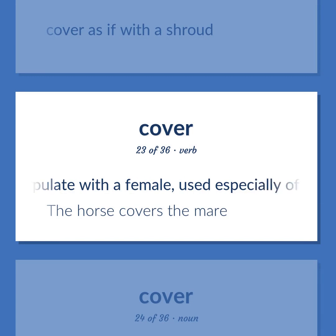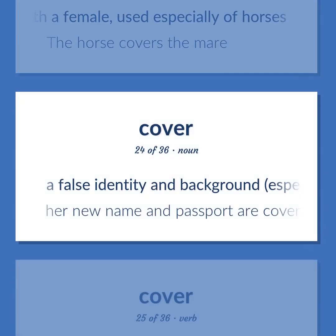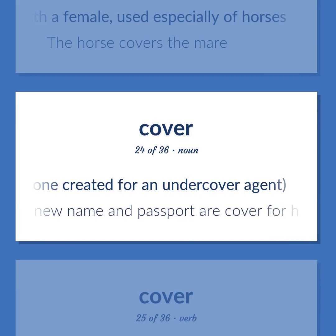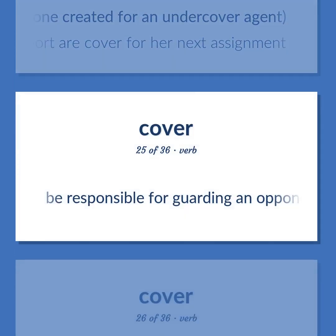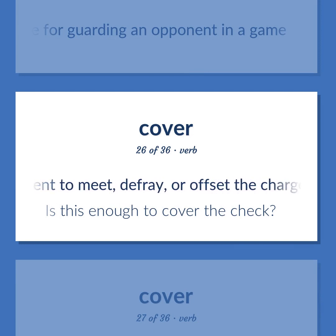Copulate with a female, used especially of horses. The horse covers the mare. A false identity and background, especially one created for an undercover agent. Her new name and passport are cover for her next assignment. Be responsible for guarding an opponent in a game. Be sufficient to meet, defray, or offset the charge or cost of. Is this enough to cover the check?